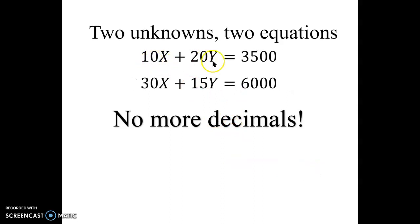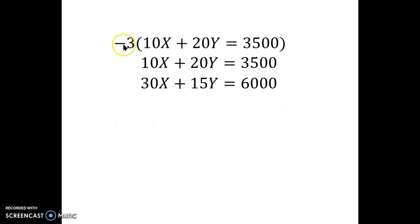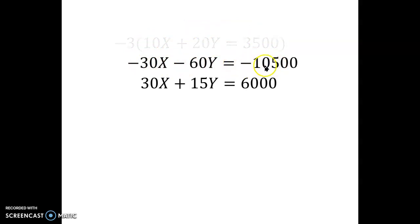So 10X plus 20Y equals 3500. Remember you've got to multiply by 100 on both sides of the equation. And if I want to use elimination, I can just multiply the first one by negative three, again, both sides of the equation. And that will give me this negative 10,500. But when I add the two equations together, I don't have any more X's. I love it. And it's just a simple situation. Solve for Y.